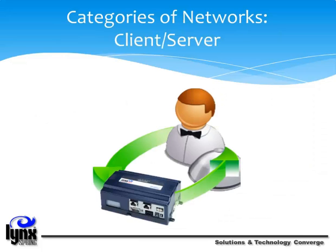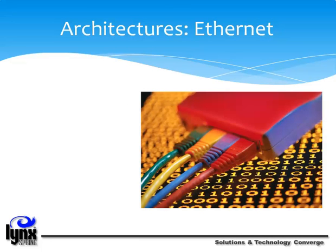Let's talk about some of the various architectures that networking can call into use, and we'll start with Ethernet. Ethernet is the most popular physical LAN layer technology in use today. Other LAN types include Token Ring, Fast Ethernet, Fiber Distributed Data Interface or FDDI, Asynchronous Transfer Mode, and Local Talk. An Ethernet connection is popular because it strikes a good balance between speed, cost, and ease of installation. These benefits, combined with wide acceptance in the computer marketplace and the ability to support virtually all popular network protocols, make Ethernet an ideal networking technology for most computer users today.